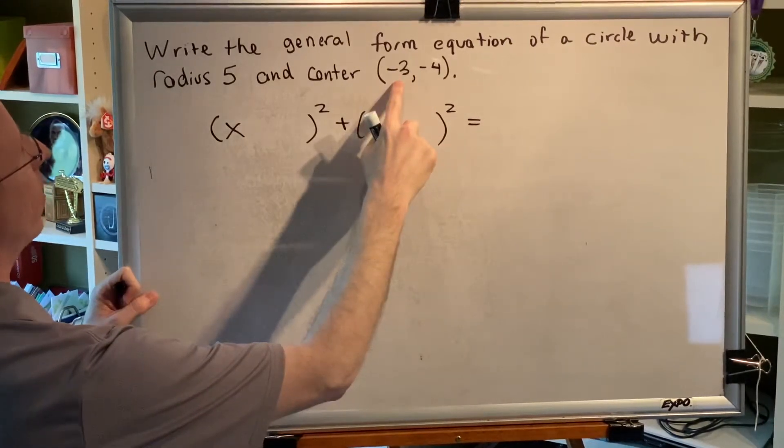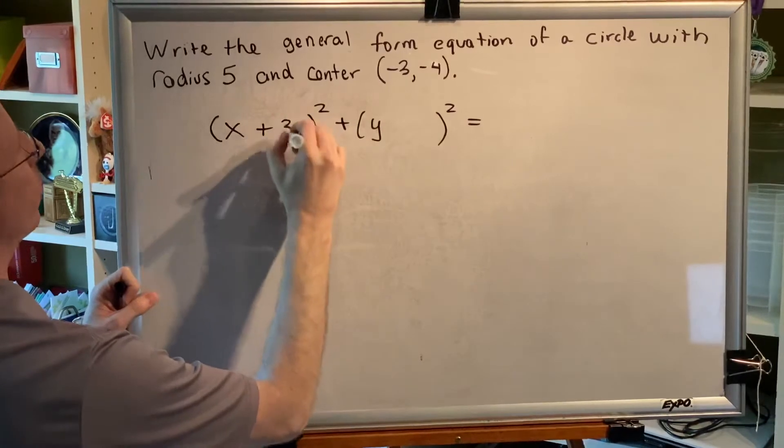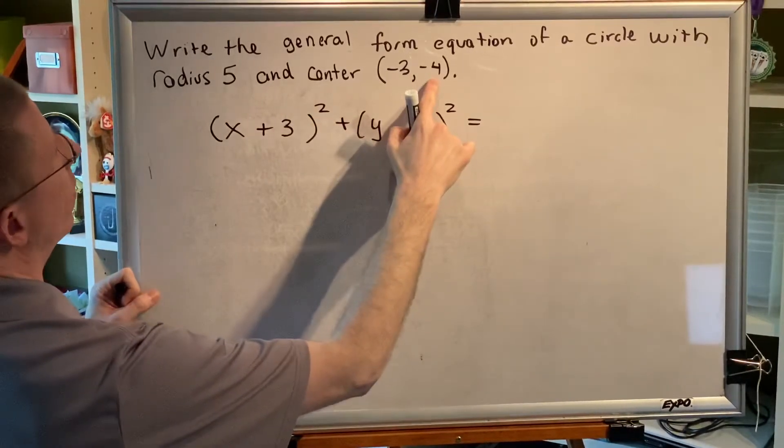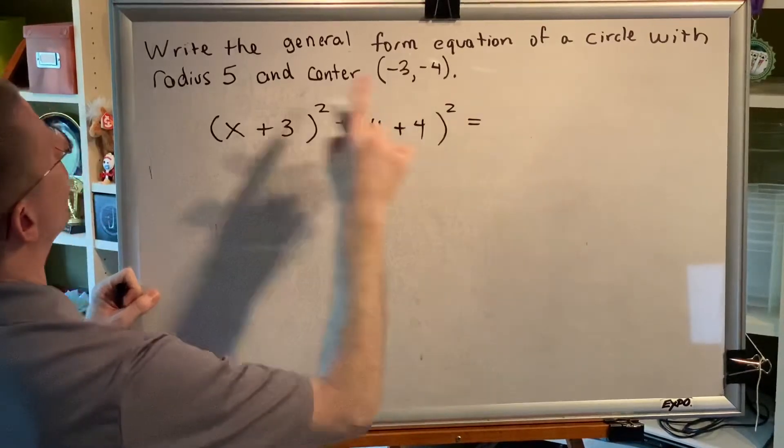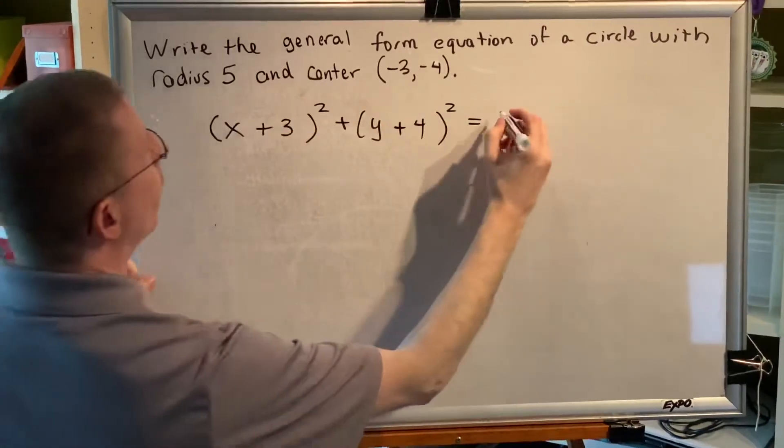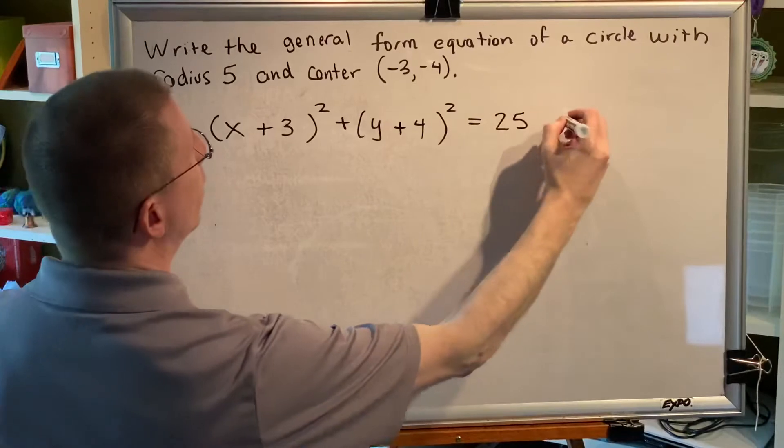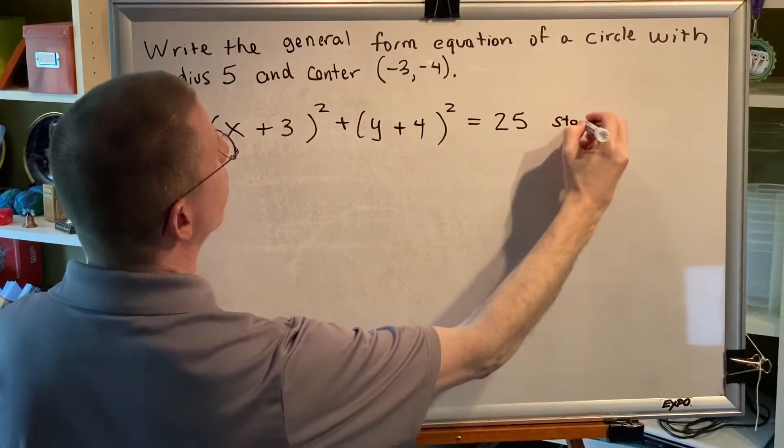So if the x coordinate of the center is -3, I'll write plus 3. And if the y coordinate of the center is -4, I'll write plus 4. Here's where r squared goes, and since the radius is 5, 5 squared is 25. This is the standard form equation of my circle.